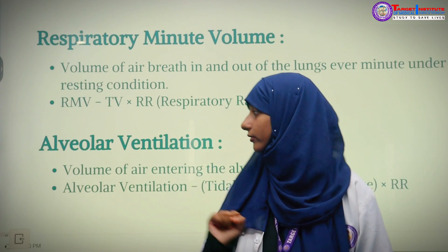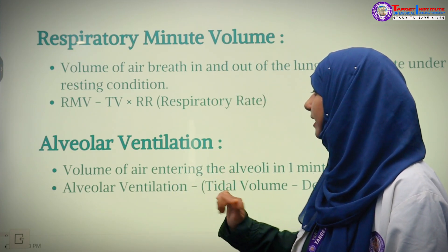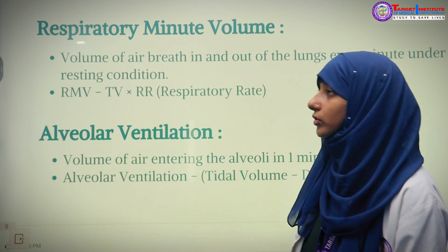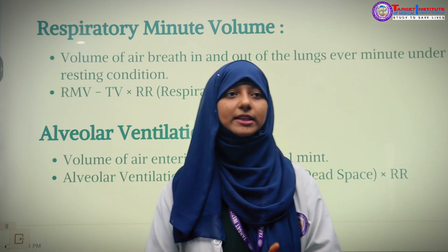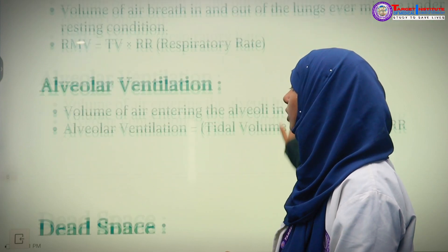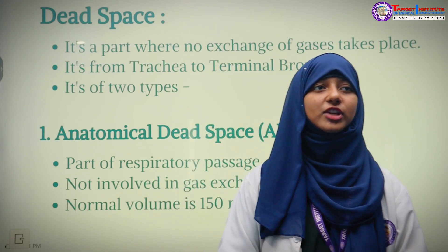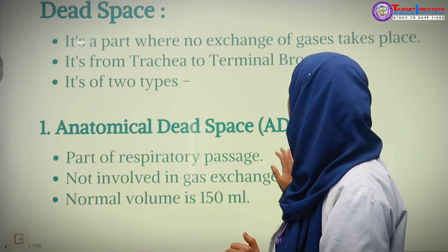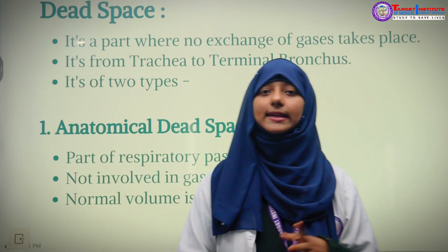For alveolar ventilation, the air taken inside partly goes into the alveoli, which are smaller sacs. Volume of air entering the alveoli per minute is known as alveolar ventilation. To calculate it, we subtract the dead space from the tidal volume and multiply by the respiratory rate. Dead space is the area where gas exchange does not occur — it extends from the trachea to the terminal bronchi. Dead space is of two types: anatomical dead space and physiological dead space.